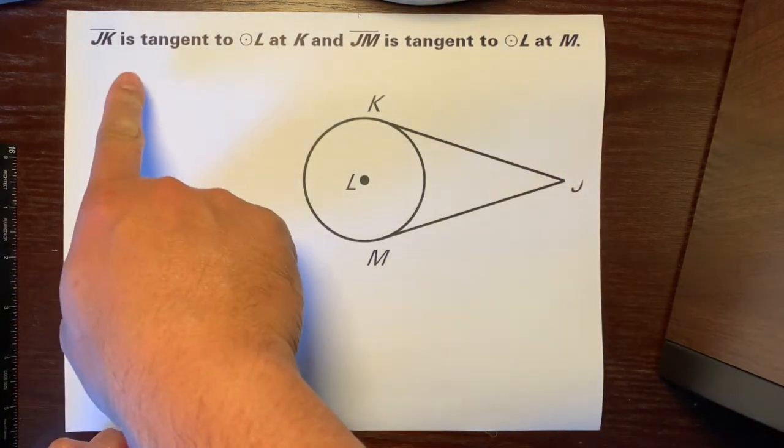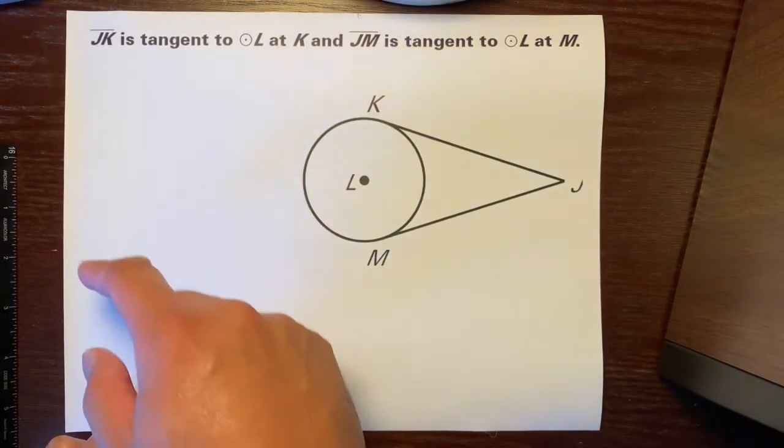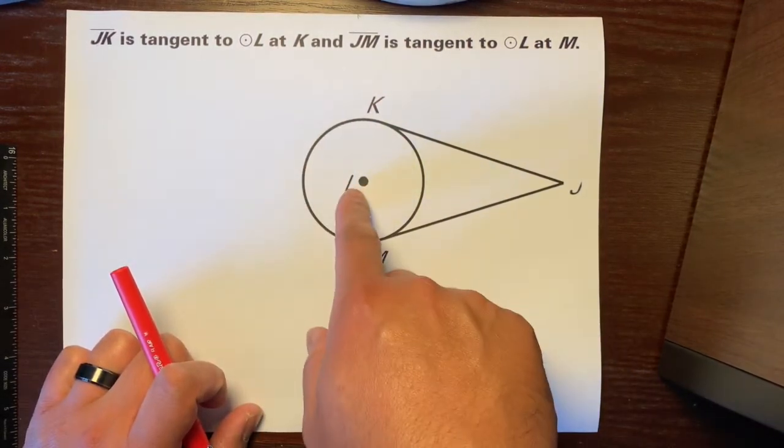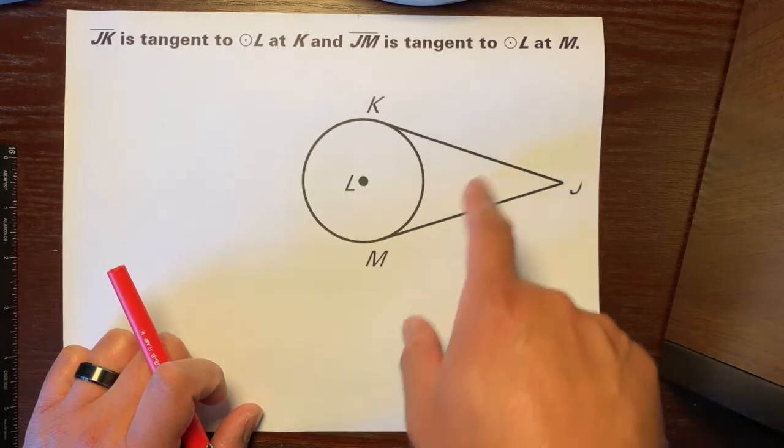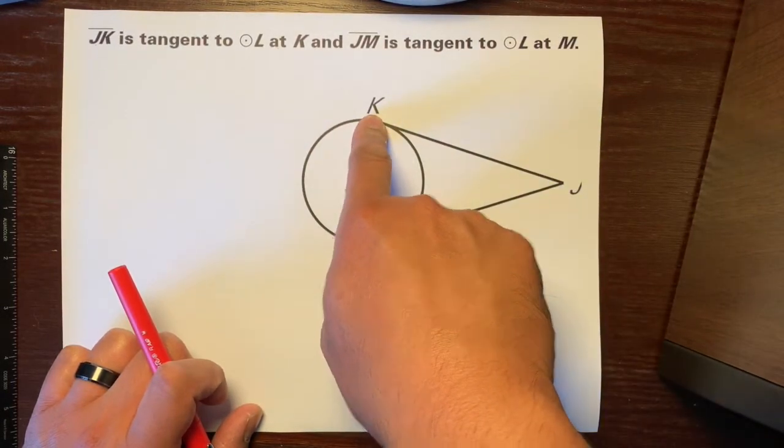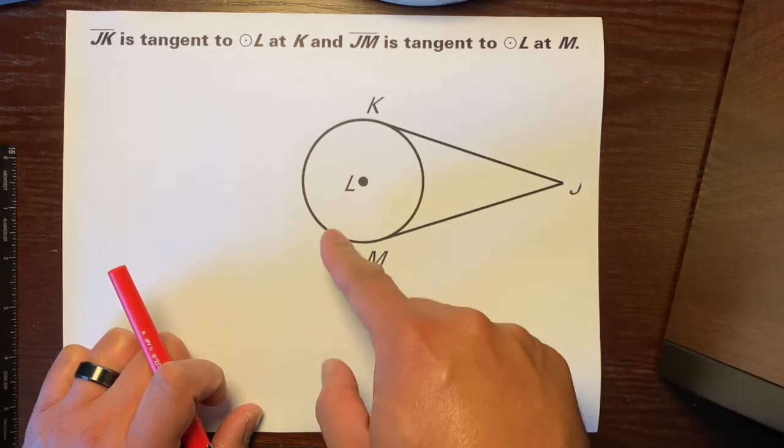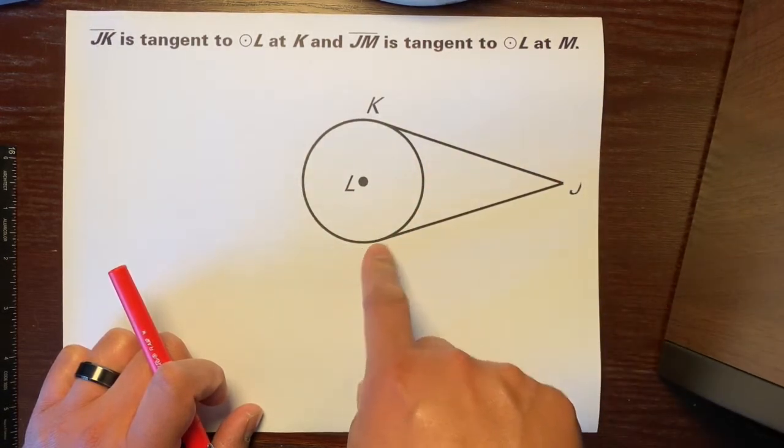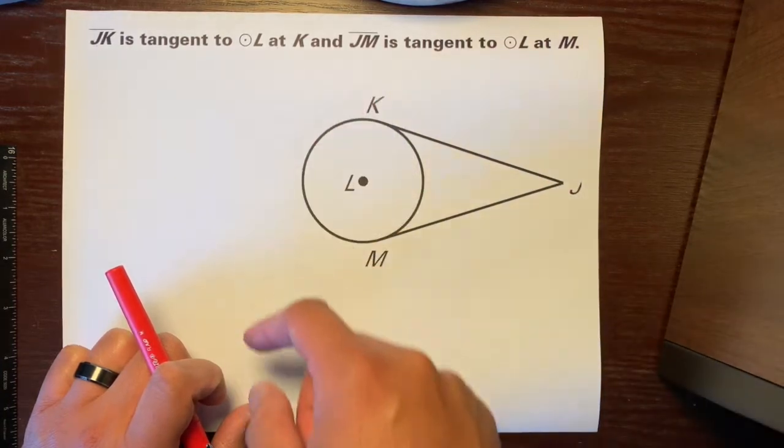So, it says here, JK is tangent to circle L. So, here's L, and this is circle L at K. So, JK is tangent here, touches the circle at this point, and JM is tangent to circle L at point M. So, here's the point of tangency, and here's the point of tangency.